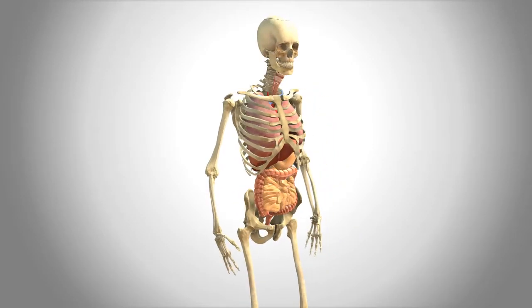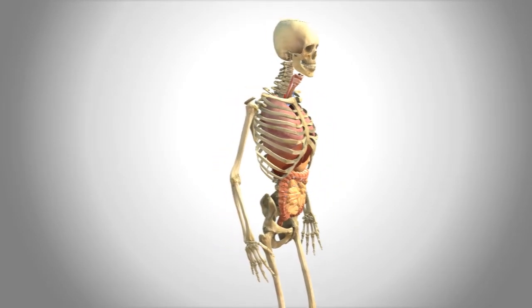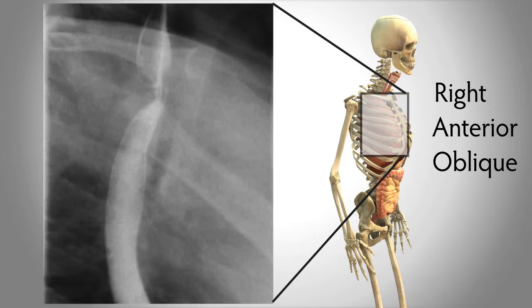To see the esophagus in greater detail, we have the patient turn to provide a right anterior oblique, or RAO, view. The patient's right anterior chest wall is against the film, or the image sensor, and the left chest wall pulls slightly away. The right oblique is one of the most common esophageal views.